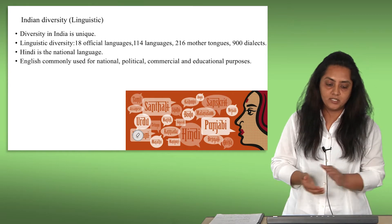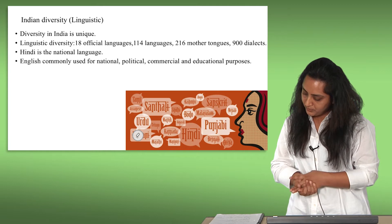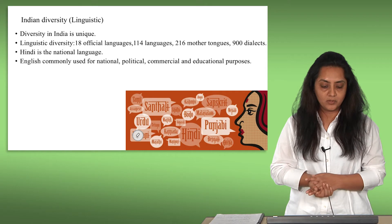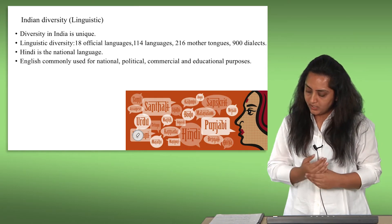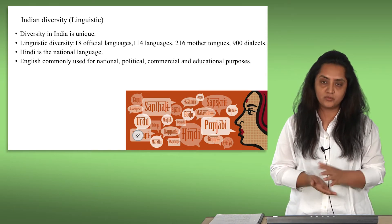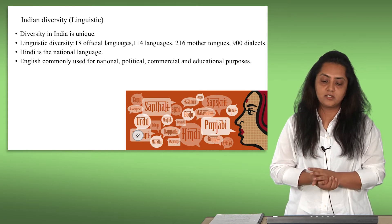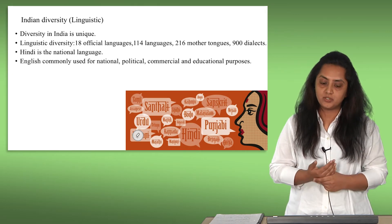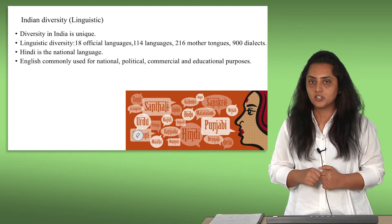Indian diversity — diversity in India is unique. Most of the people are Hindus. When it comes to linguistic diversity, around 22 languages are recognized by the constitution of India, and out of those, 18 are official languages. Over 114 languages are spoken in India. There are 216 mother tongues and 900 dialects. Hindi is the national language of India, and English is commonly used for national, political, commercial, and educational purposes.